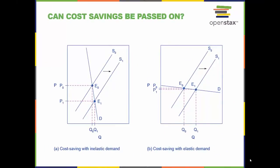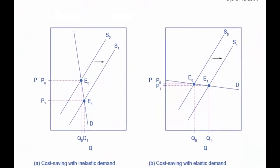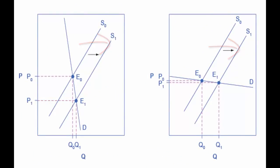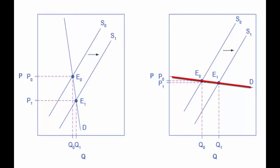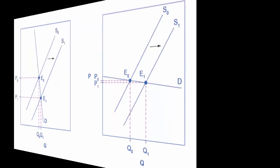Elasticity analysis can give us insight into the impact of forces like cost-saving gains — the introduction of new equipment or new production practices that decrease the cost of production for suppliers. Cost-saving gains cause supply to shift to the right from S0 to S1; that is, at any given price, firms will be willing to supply a greater quantity. If demand is inelastic, as in the graph on the left, the result will be substantially lower prices. If demand is elastic, as in the graph on the right, the result will be only slightly lower prices. Consumers benefit in either case from a greater quantity at a lower price, but the benefit is greater when demand is inelastic.